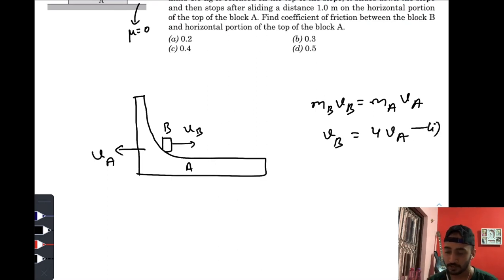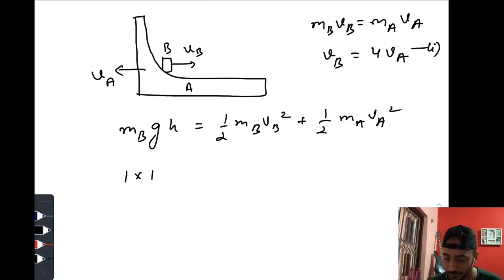Now when block B falls from this height, its potential energy decreases, which raises the kinetic energy of both blocks. So mB g h equals half mB vB squared plus half mA vA squared. So 1 times 10 times 0.4, because it was 40 centimeters, equals half times 1 times vB squared, which is 16vA squared, plus half...